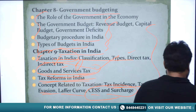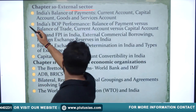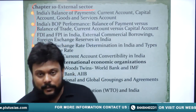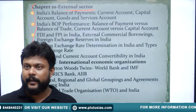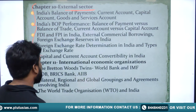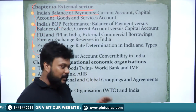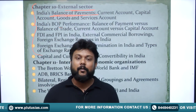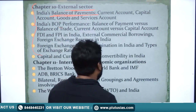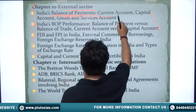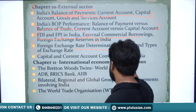In the external sector chapter, we'll discuss foreign exchange — how it is maintained, how currency prices rise or fall relative to world currencies, and the repercussions for the economy. We'll study the Balance of Payments (BoP), including the 1991 LPG crisis, current account deficit, capital account deficit, and committees on capital account and current account convertibility. We'll also study FDI policies and foreign exchange rate determination.